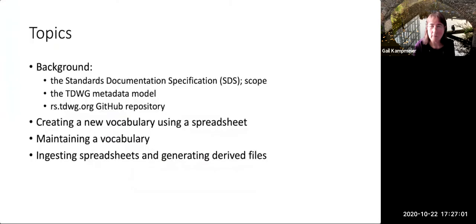I'm going to talk about the standards documentation specification and its scope, about the TDWG metadata model, and about the rs.tdwg.org GitHub repository. Then I'll show you how you can create a new vocabulary using a spreadsheet, and how vocabulary maintainers can change them using spreadsheets as well. Finally, I'll delve into some of the technical details about how those spreadsheets are ingested and the derived files are generated.